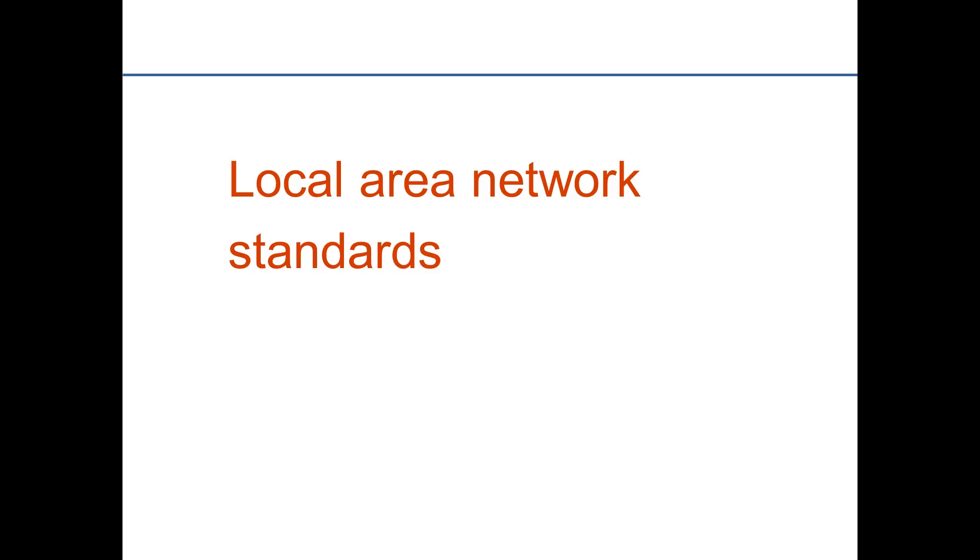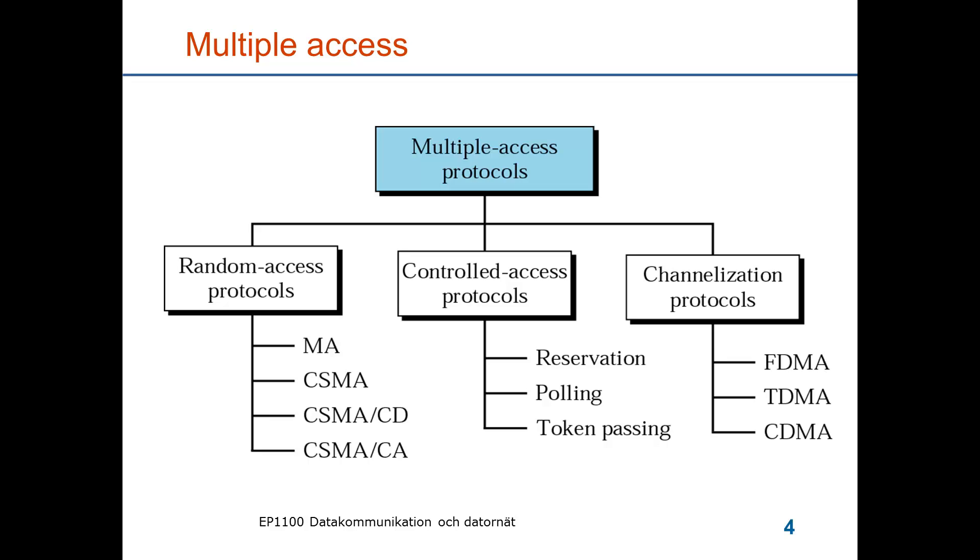In this module, the first part will cover local area network standards. We have seen that multiple access is a necessary function for building local area networks. We have reviewed the possibilities of doing random access through multiple access with carrier sensing, with collision detection or collision avoidance.